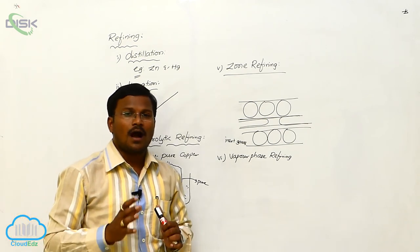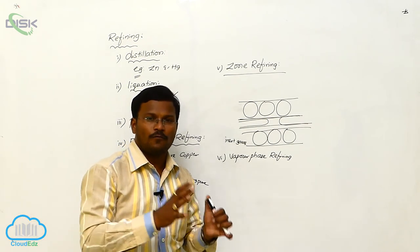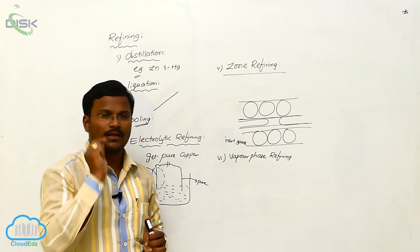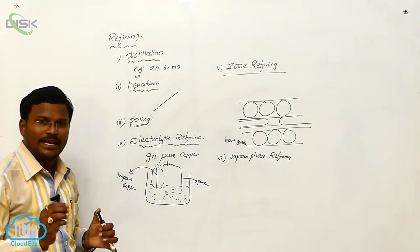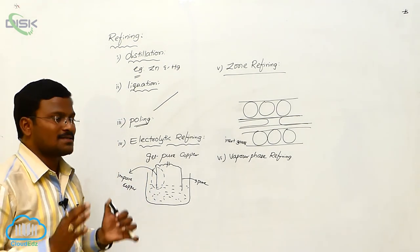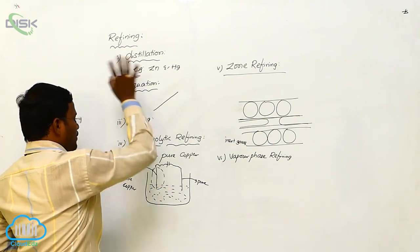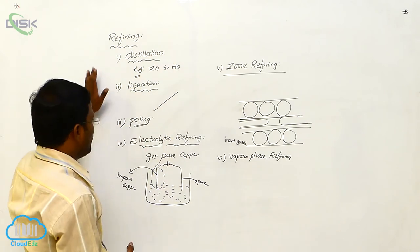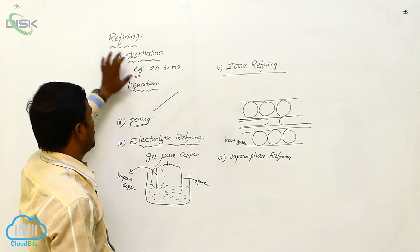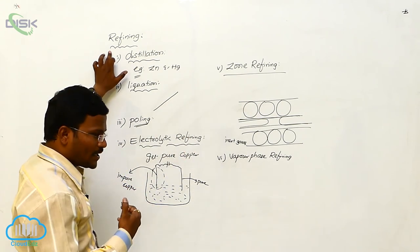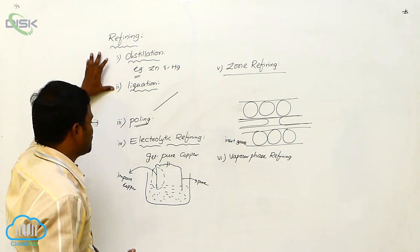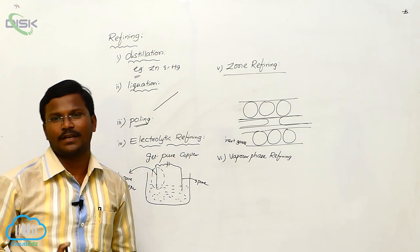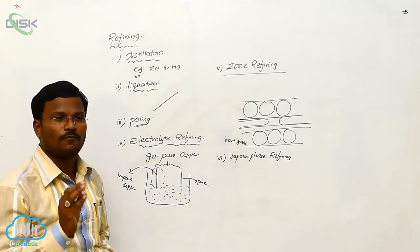Refining means the extraction of metal which contains some impurities — the resulting metal is called crude metal. We have to eliminate the impurities present with the crude metal; this process is called refining. The various processes used for conversion of crude metal into pure metal include: distillation, liquation, poling, electrolytic refining, zone refining, and vapour phase refining.